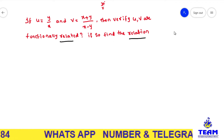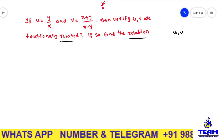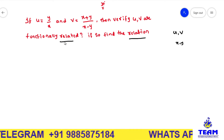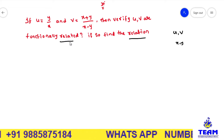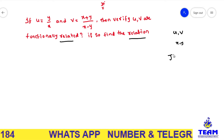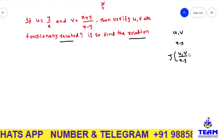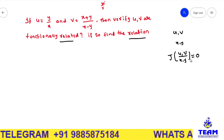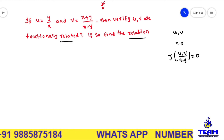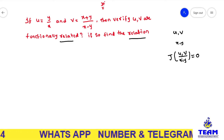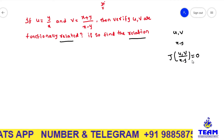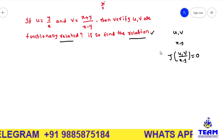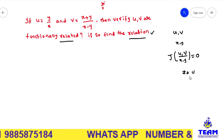Here they are given u and v, two functions in terms of x and y. To verify these functions u, v are functionally related, it is enough to prove the Jacobian of u comma v with respect to x comma y is 0. If it is 0, then you can say the functions u and v are functionally dependent. If the Jacobian is not equal to 0, then you can say functionally independent, and there is no relation between u and v.